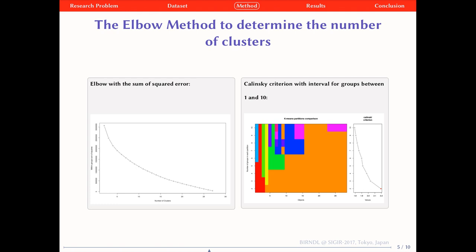To determine the number of clusters, we apply the ELBO method that allows us to interpret and validate the coherence in clusters. The first figure shows the result of the ELBO with the sum of the squared error. And the second figure, to the right, uses the Calinski criterion with interval for groups between 1 and 10.